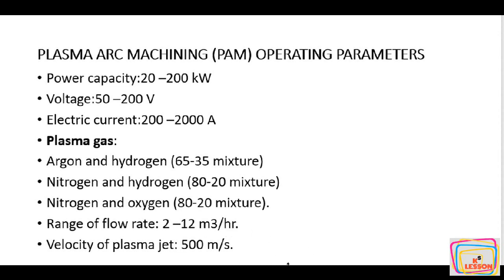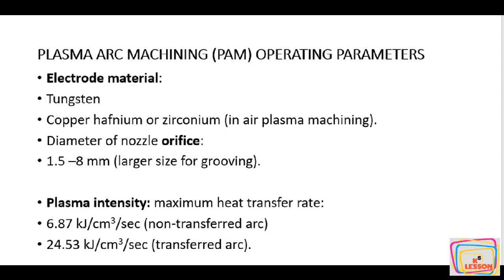Electrode materials include tungsten, copper, hafnium, or zirconium in air plasma machining. The diameter of the nozzle orifice varies from 1.5 mm to 8 mm — larger sizes are used for grooving. As the nozzle size increases, plasma intensity and maximum heat transfer rate increase. For the non-transferred arc, the maximum heat transfer rate is 6.87 kilojoules per centimeter cubed per second, and for the transferred arc it is 24.53 kilojoules per centimeter squared per second.